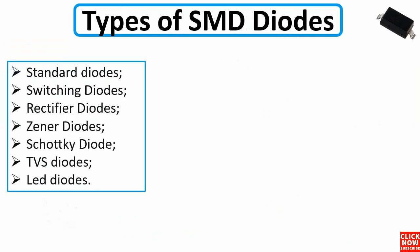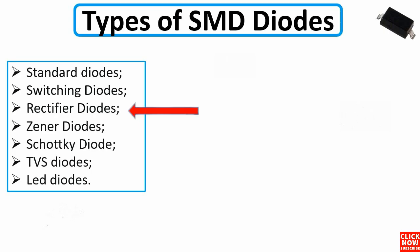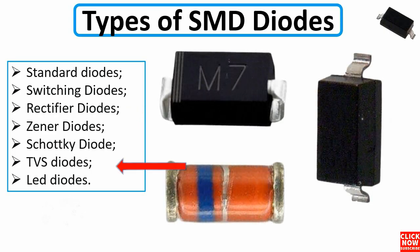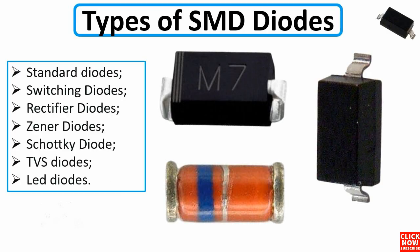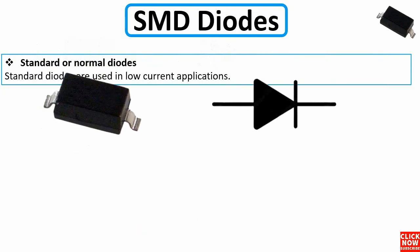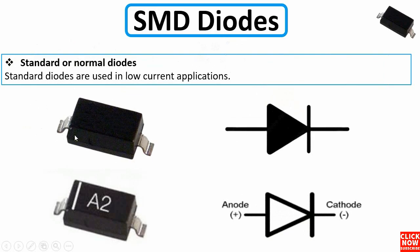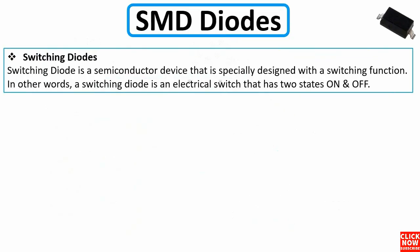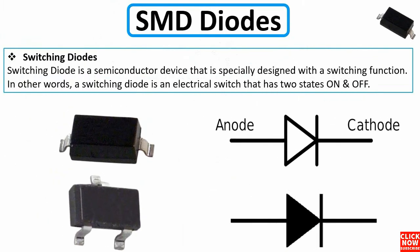There are many types of diodes: standard diodes, switching diodes, rectifier diodes, Zener diodes, Schottky diodes, TVS diodes, and LED diodes or light-emitting diodes. Standard or normal diodes are used in low current applications. As you can see, this is the standard diode with two terminals, shown with its symbol of anode and cathode.